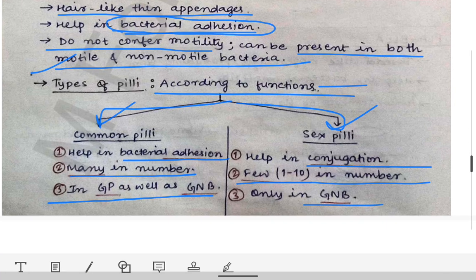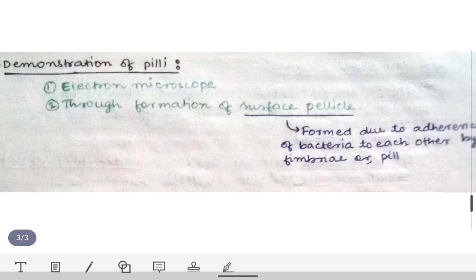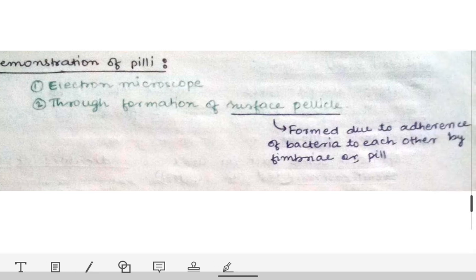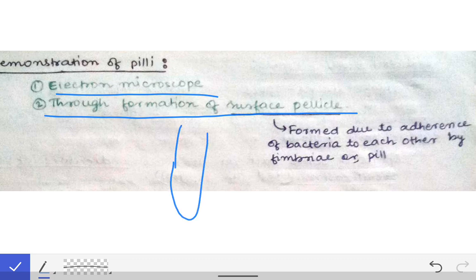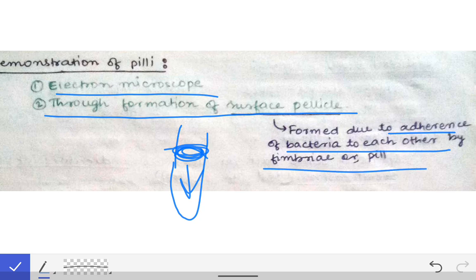For demonstration of pili, we can use electron microscopy or observe the formation of a surface pellicle. In the surface pellicle method, bacteria are inoculated in a test tube, and after incubation, a growth layer forms at the surface of the growth media. This is due to adherence of bacteria to each other by fimbria or pili, indirectly demonstrating their presence.